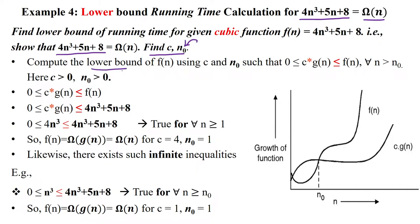For lower bound calculation, the given criteria is: 0 ≤ c·g(n) ≤ f(n). Here c is the constant, g(n) is one function and f(n) is another function, which should be true for all input sizes n greater than the initial input size n₀. The constant c and initial input size n₀ are always positive numbers greater than 0.